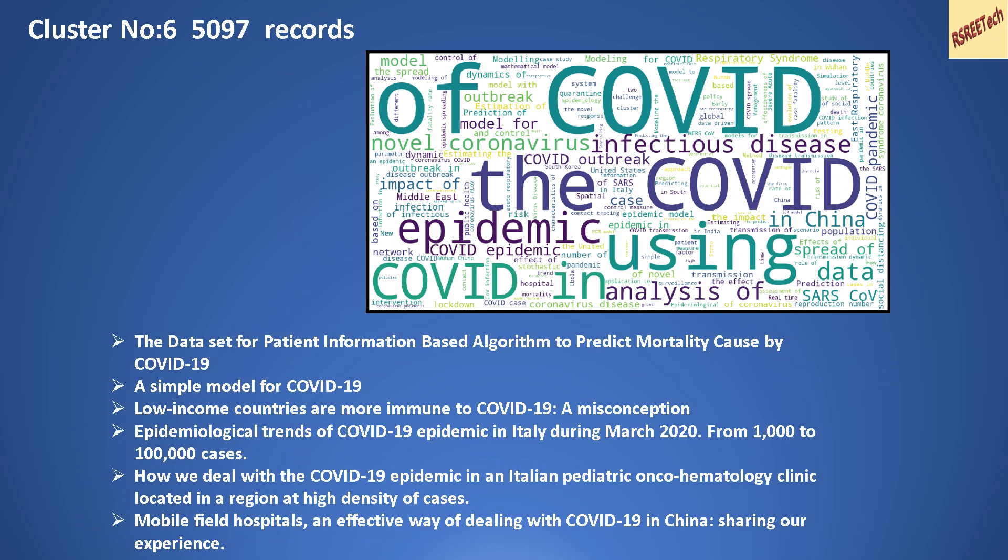Cluster number 6 has close to 5,000 records. The word cloud on the titles shows words like 'COVID', 'epidemic', 'analysis', 'outbreak', 'model', and 'prediction'. This cluster is mostly about analysis of the epidemic. The titles include papers on patient information-based algorithms to predict mortality and analyses of how the epidemic has affected patients in Italy.